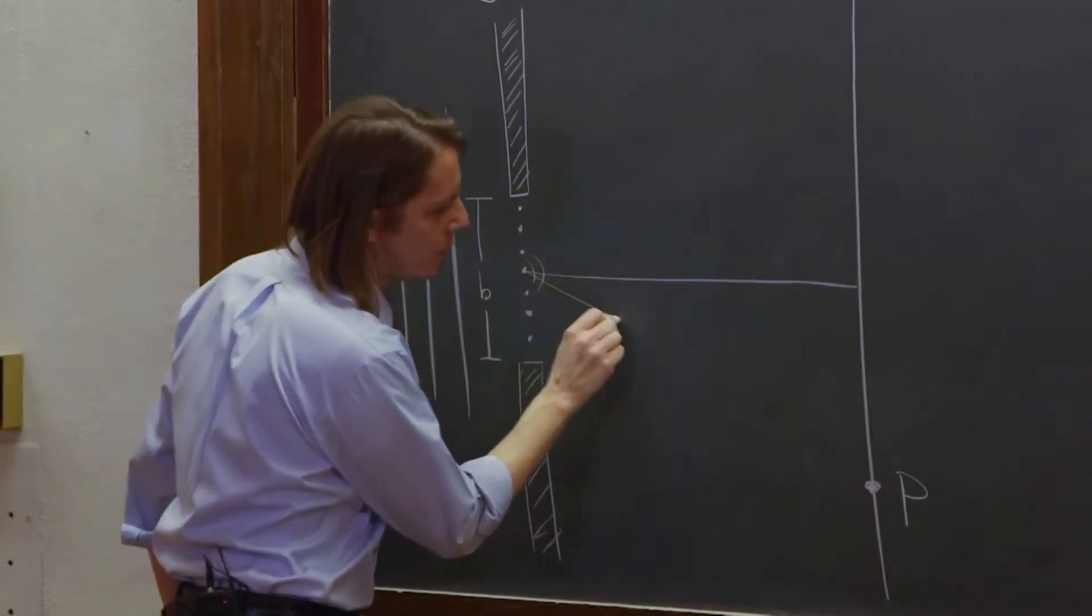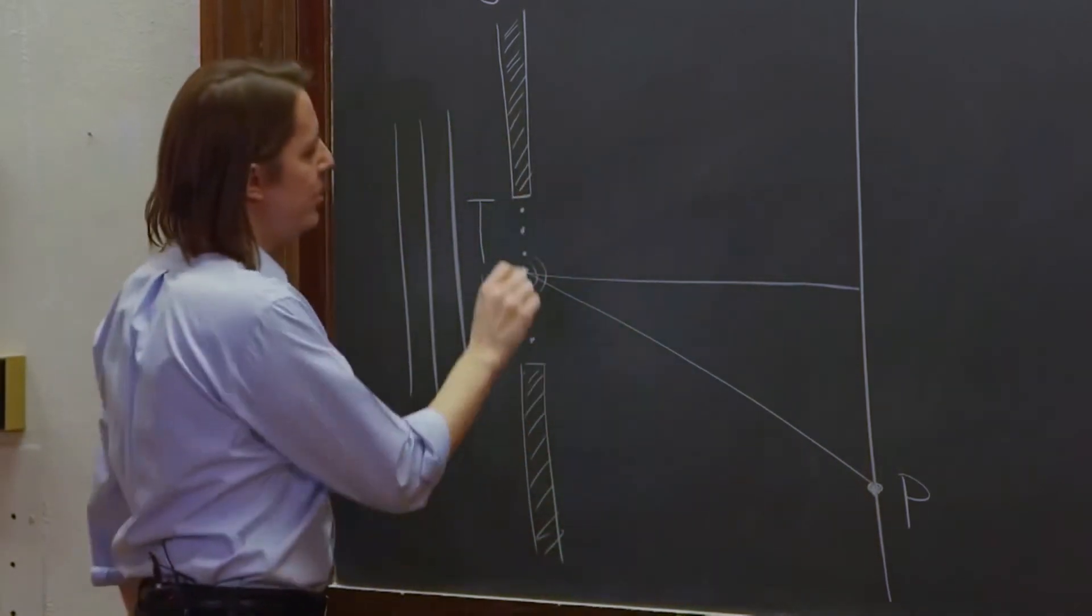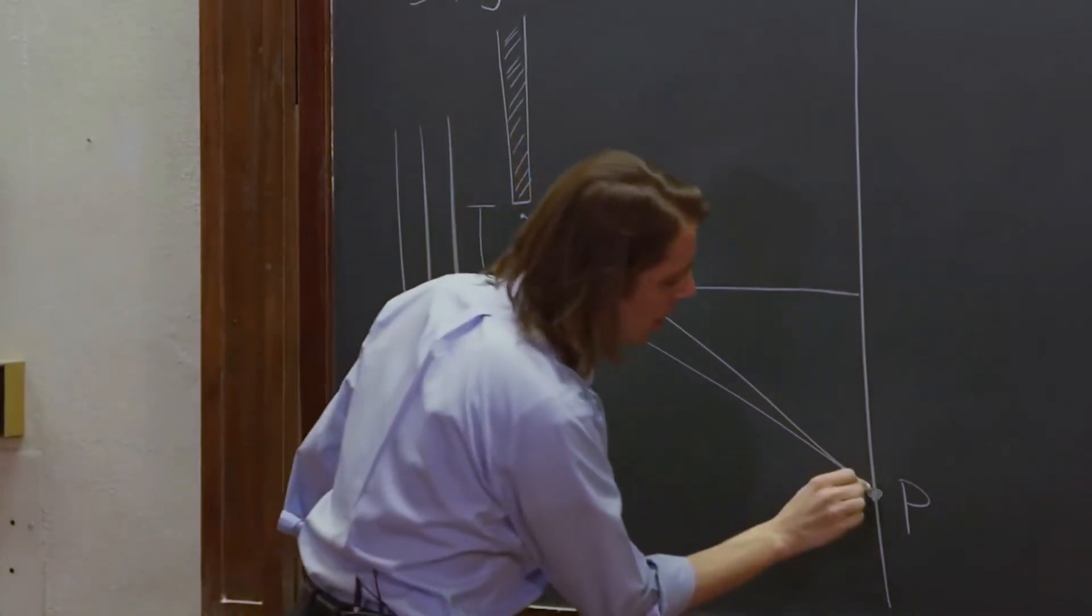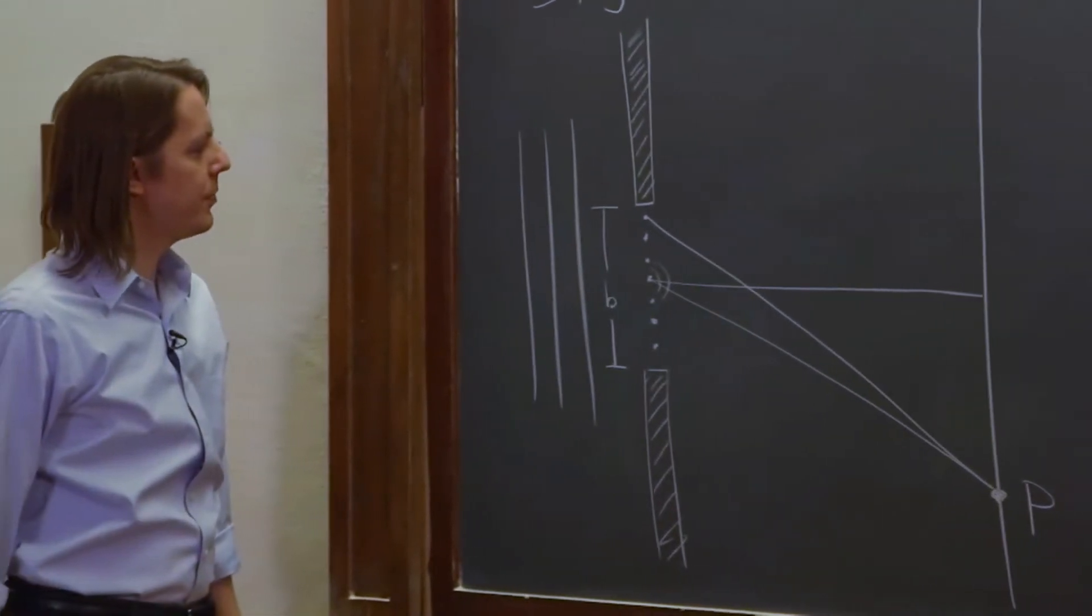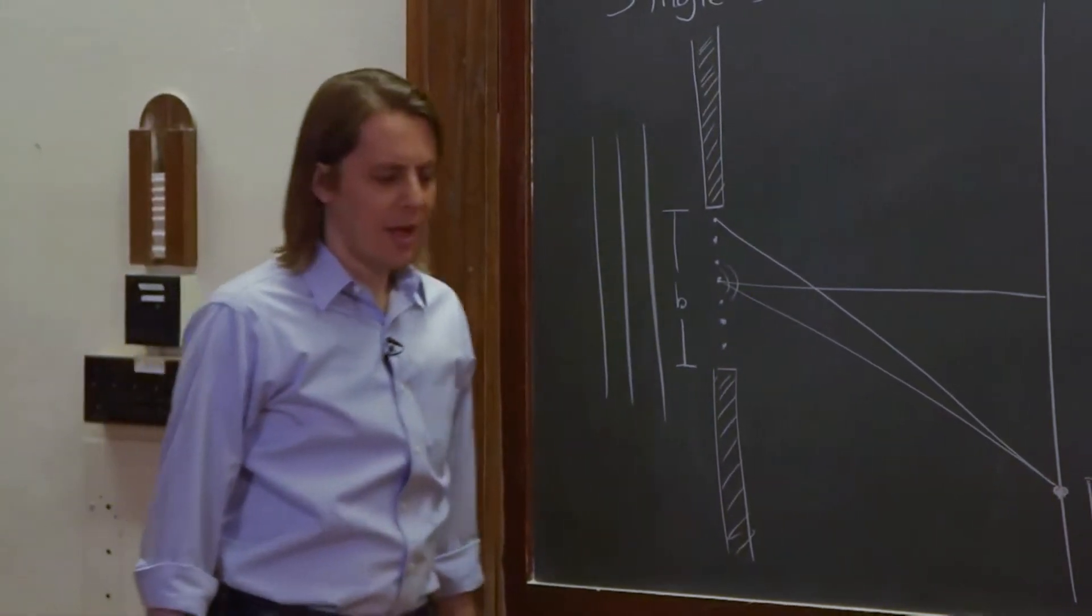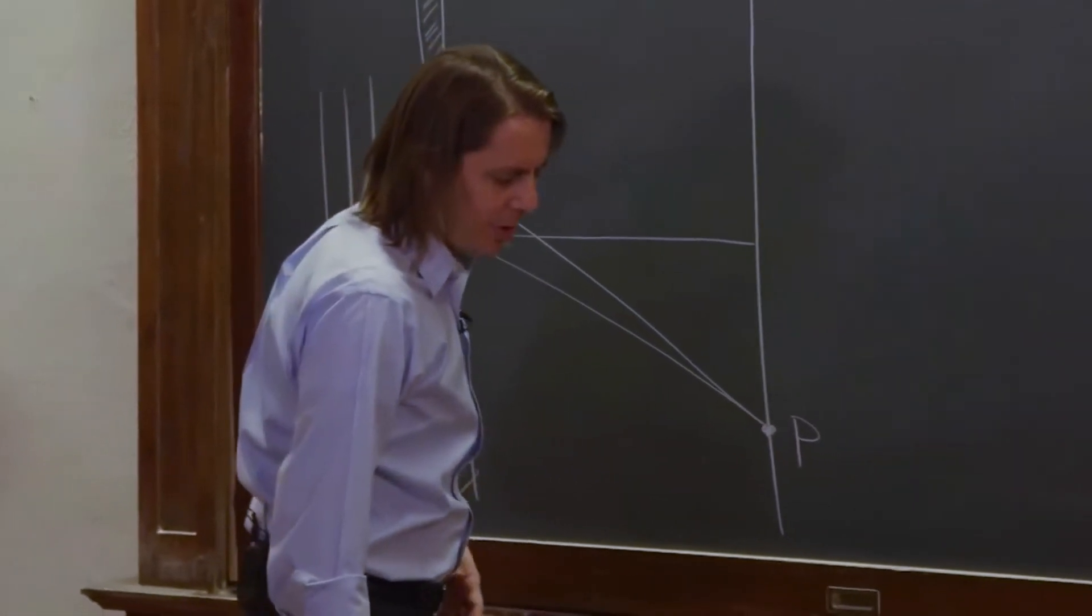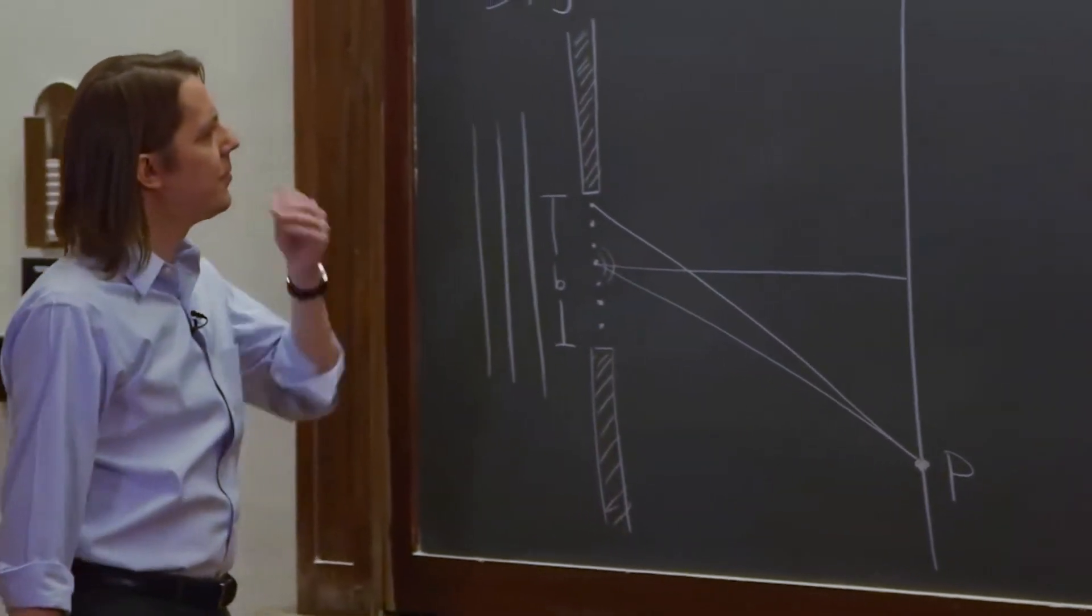And really, what we have to do is think about all these little spherical waves sending light to point P. For example, we'll have this one make it to point P, and we'll have that one make it to point P, those two waves. And we've got to add those up, keeping up with the interference.